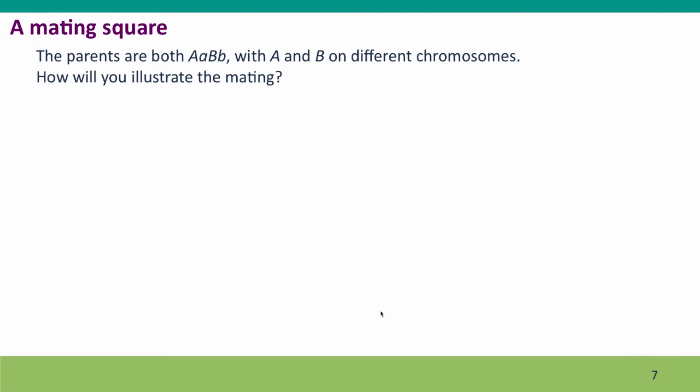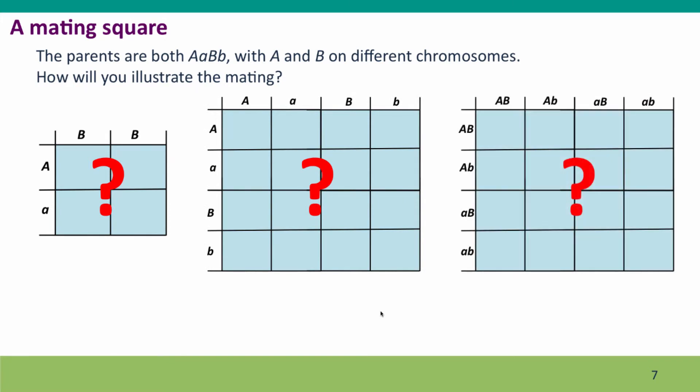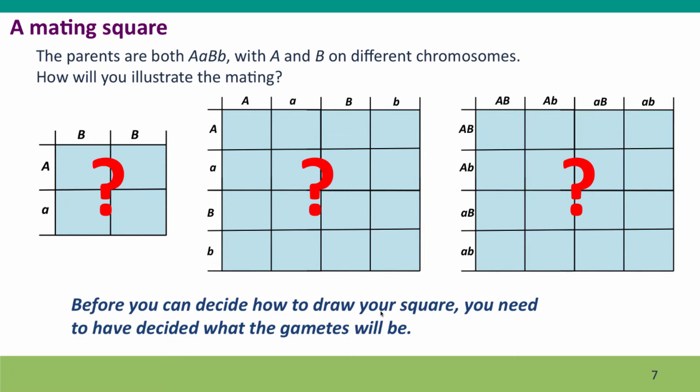Here's a more complicated genotype for the parents. Again, both parents have got the same genotype, but now we're considering two genes and the parents are heterozygous for both genes and the genes are on different chromosomes. How are you going to illustrate this mating? What kind of a mating square will you use? I've shown three examples here, and your challenge is to figure out which one is appropriate. And what you need to remember is that in order to decide what kind of square you want to draw, you need to have decided what the gametes will be, because it's the properties of the gametes that determine the kind of square that's appropriate.